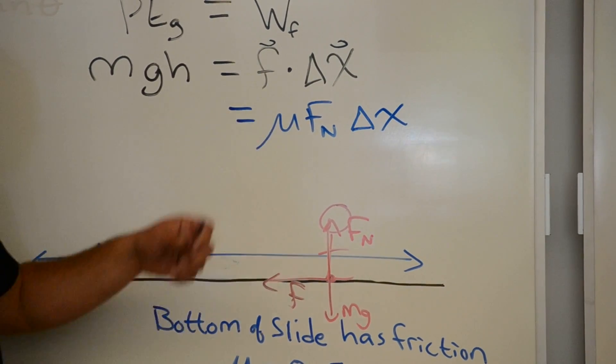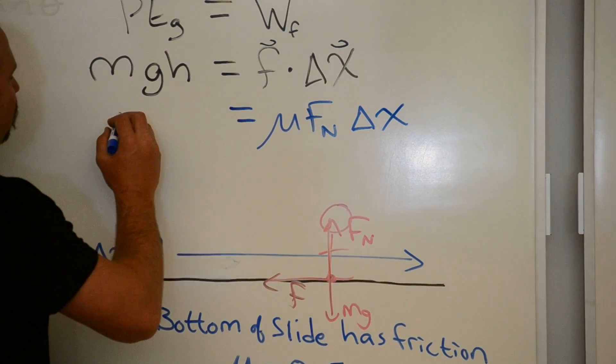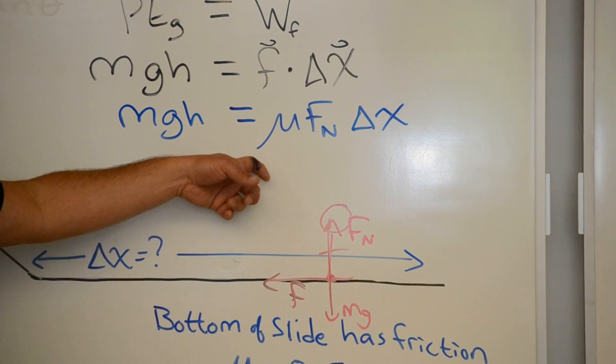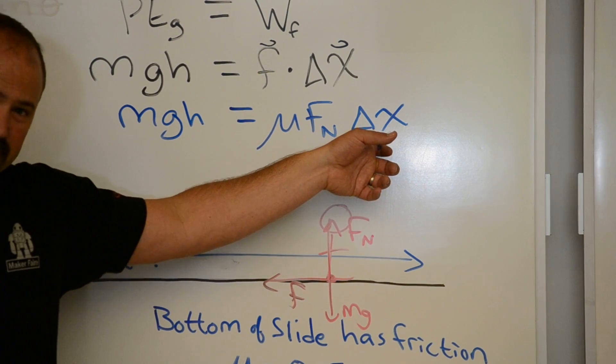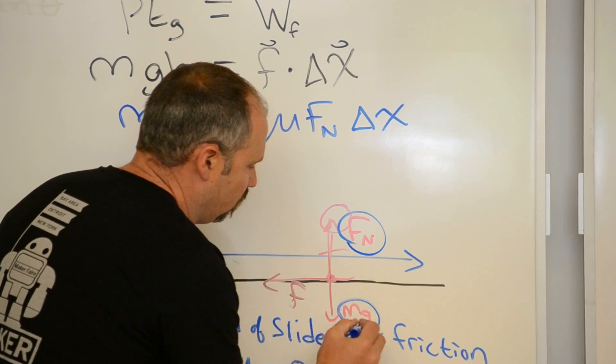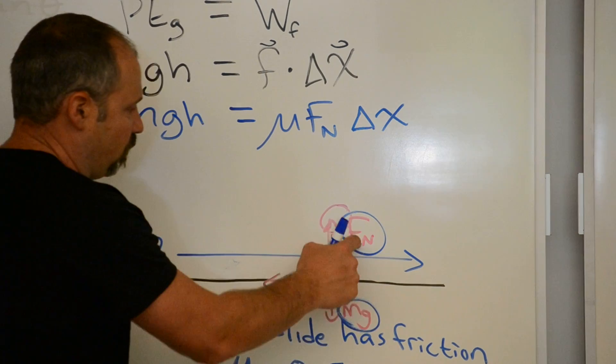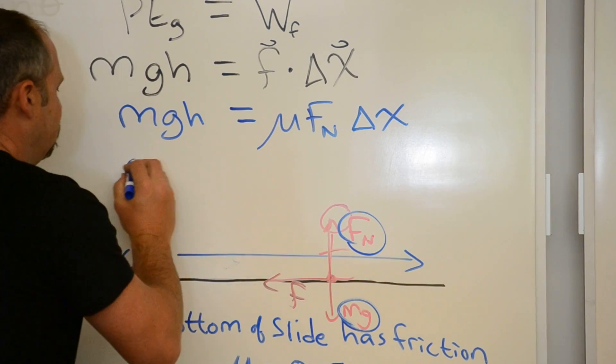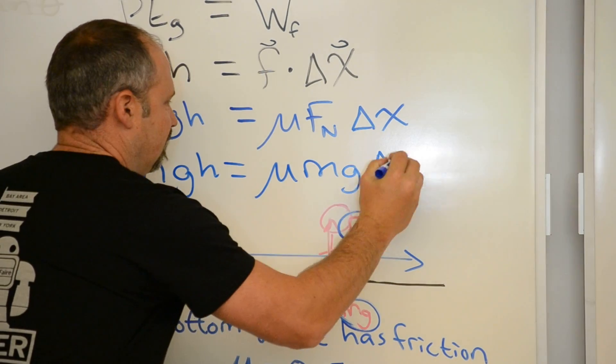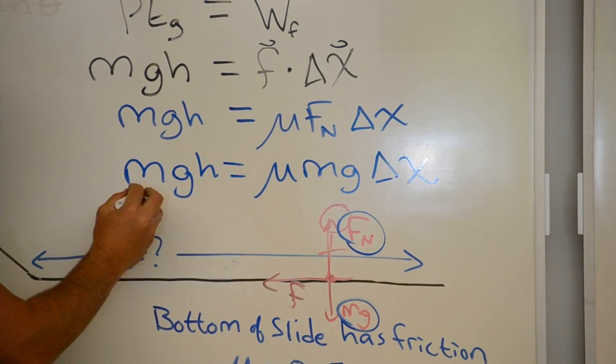I'm leaving off the negative sign. That just simply tells us that the energy is being transferred out. So, mgh equals mu times the normal force times the distance. And I know that the normal force has to equal mg because she's not accelerating up or down. So, these two forces have to balance. So, now I have mgh equals mu mg times the distance traveled. And I can then divide both sides by mg.